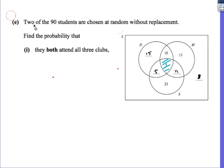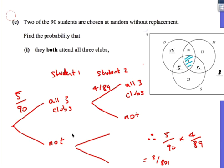And then it follows on, and now it becomes a tree diagram kind of question. Two of the 90 students are chosen at random without replacement. So make a note of that. Find the probability that they both attend all three clubs. So all three clubs, there's five students to begin with that attend all three clubs. So think of it like this: student one, chance of them attending all three clubs would be five out of 90. That's the first student.